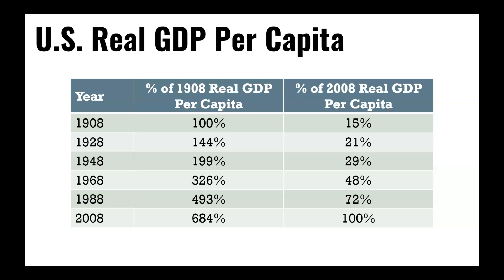Using 1908 as the base year, by 2008 we were nearly seven times larger as an economy than before. Clearly there has been an improvement in the standard of living for pretty much everybody in this country, as real GDP per capita continues to grow. It doesn't mean there isn't room to improve, or that there aren't people who are struggling economically. But it does seem to indicate that even the worst-case economic situation in America today is significantly better than the worst-case situation 100 years ago.